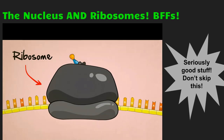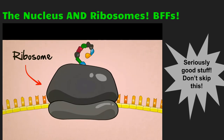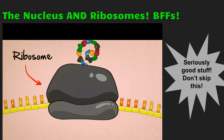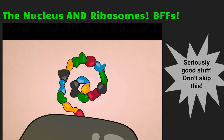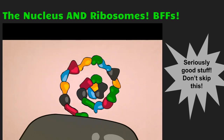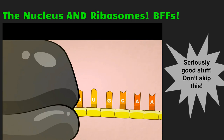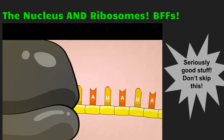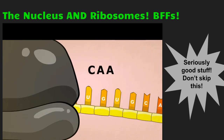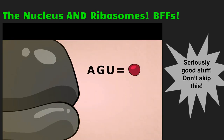Ribosomes are protein-building machines. They read the RNA code three letters at a time, suck amino acids out of their surroundings, and stick them together in a chain according to the RNA code. As the chain grows, it bends, it folds, and it sticks to itself to form a perfectly shaped protein. Every three letters of the RNA code tell the ribosome which of the 20 different kinds of amino acids should be added next. For example, CAA tells the ribosome to grab a glutamine; AGU tells it to grab a serine, and so on.